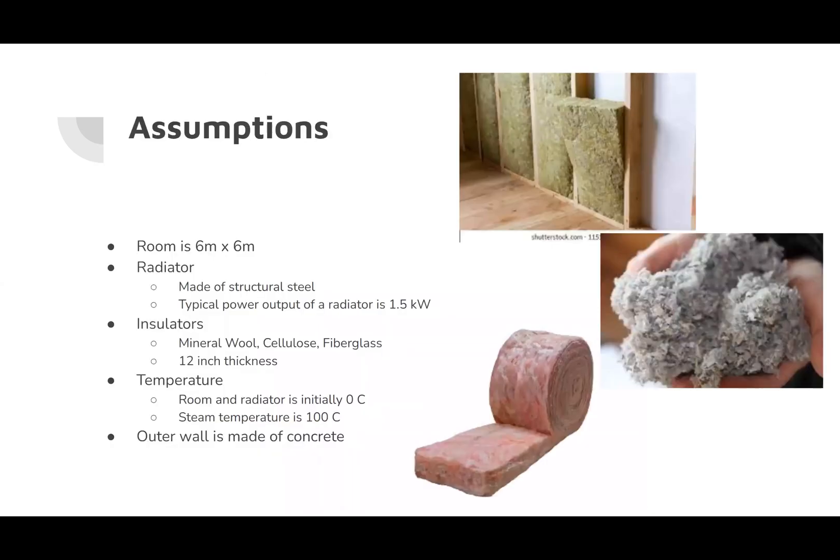So here are assumptions that we made for our COMSOL simulation. First of all, our room is going to be six meters by six meters. Our radiator is made of structural steel and has a typical power output of around 1.5 kilowatts. We're going to be testing three types of insulators: mineral wool, cellulose, and fiberglass, and those insulators are going to be around 12 inches thick.